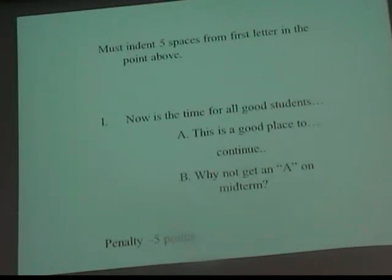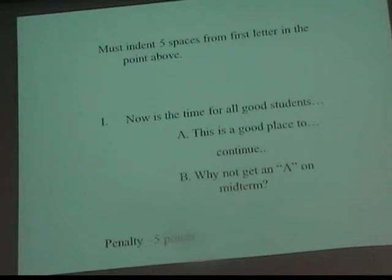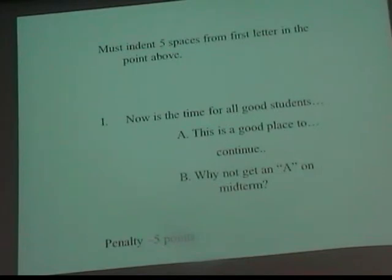After you write your first sentence — for example, Roman numeral one, period, tab, then your sentence — here's how the five-space rule works: N is one space, O is two, W is three, the space is four, and the I is five. That capital A can't be any closer to the left than underneath that I. In my example I've actually hit the tab twice, so it's farther over — it can be farther, but it can't be closer to the left. Then I wrap the sentence and hit another tab to get it out of the way so I can look right down and see all the capital letters.